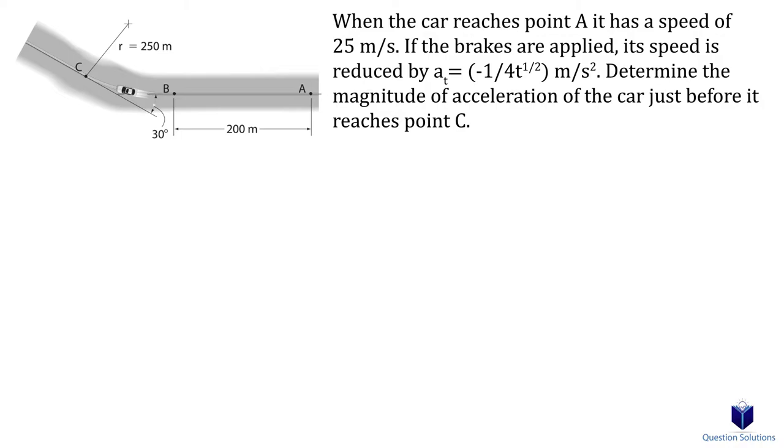The first thing we need to do is figure out the time it took for the car to go from point A to point C. To get there, we will have to go through a few integrations. So first, let's start off by using what we know. We know the initial velocity of the car, which is 25 meters per second. We also know acceleration, or rather deceleration.